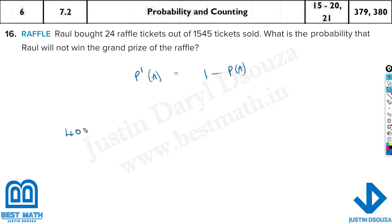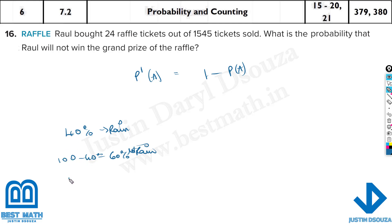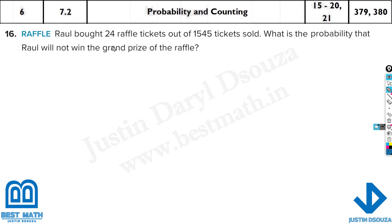For example, imagine there is a 40% chance of rain. What is the probability it's not going to rain? 100 minus 40% equals 60% — it's not going to rain. The same way here, find the probability of winning first. Not winning will be 1 minus that value. So probability of winning is 24 divided by 1,545, and not winning is just 1 minus that.